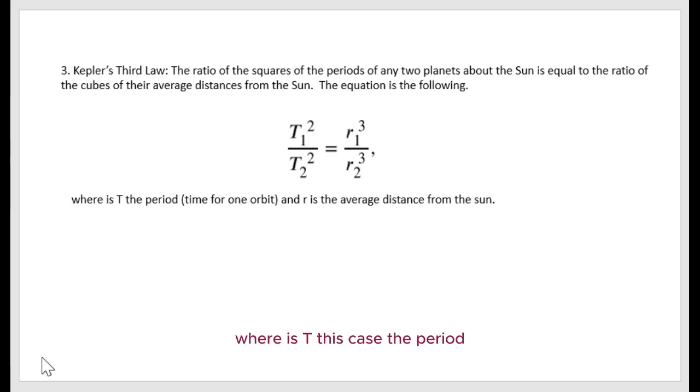Where T is the period, the orbital period, and r is the average distance from the Sun.